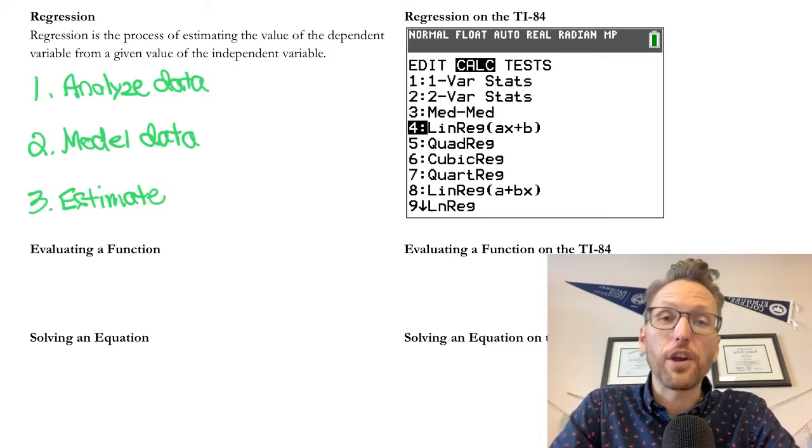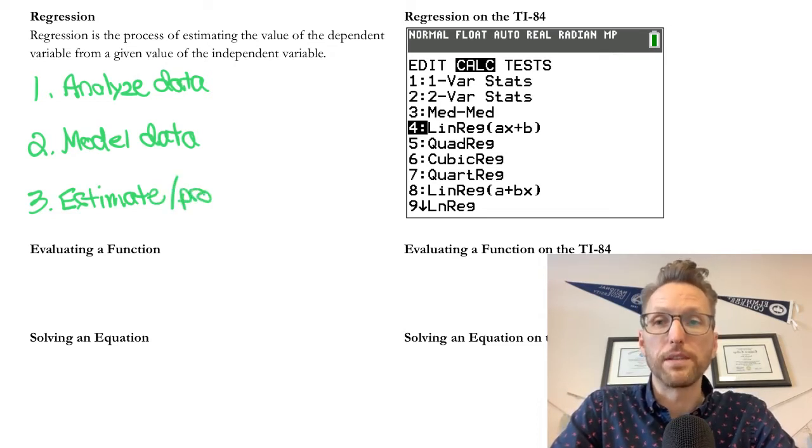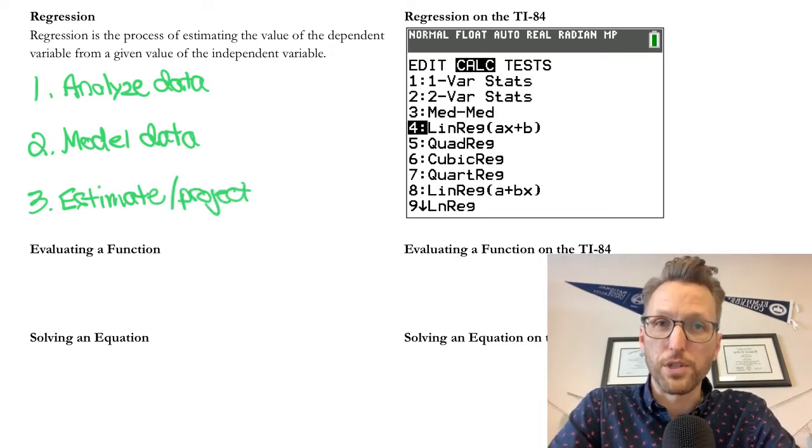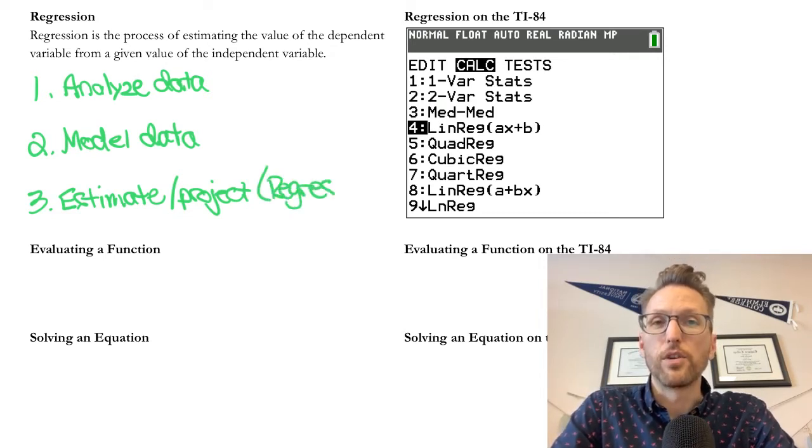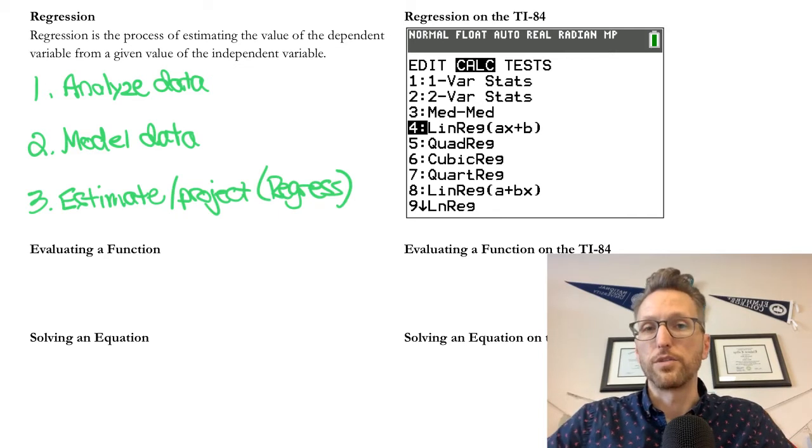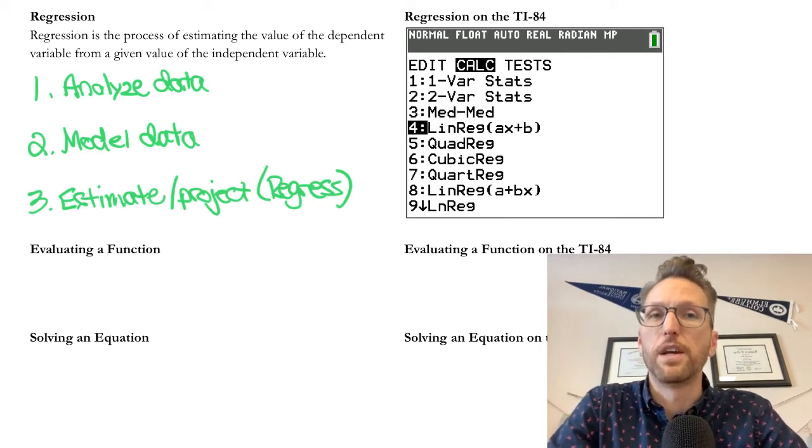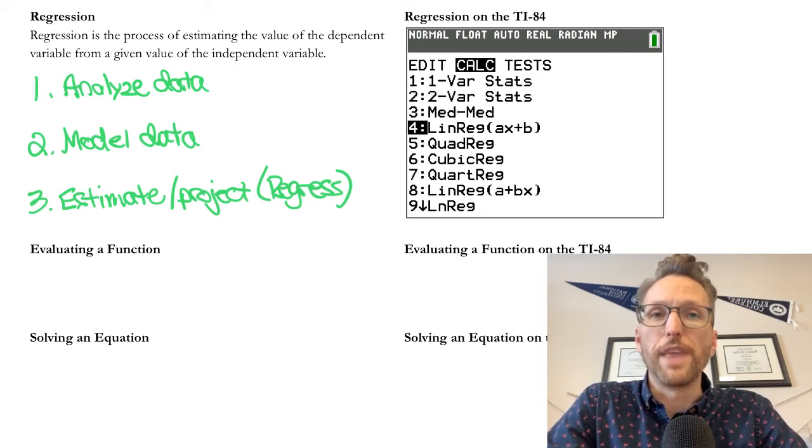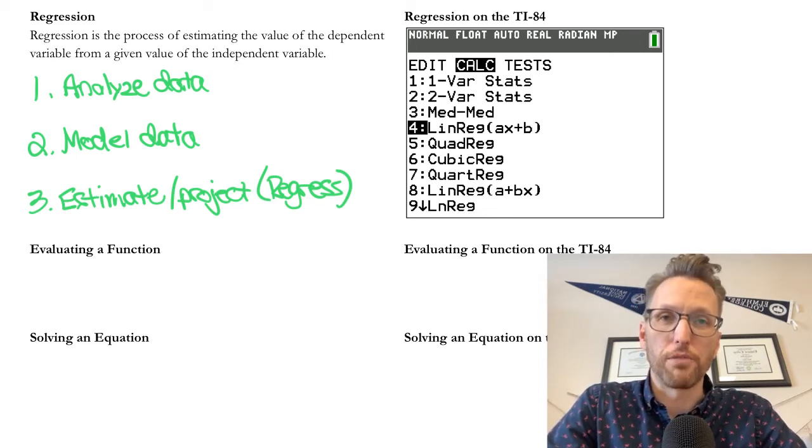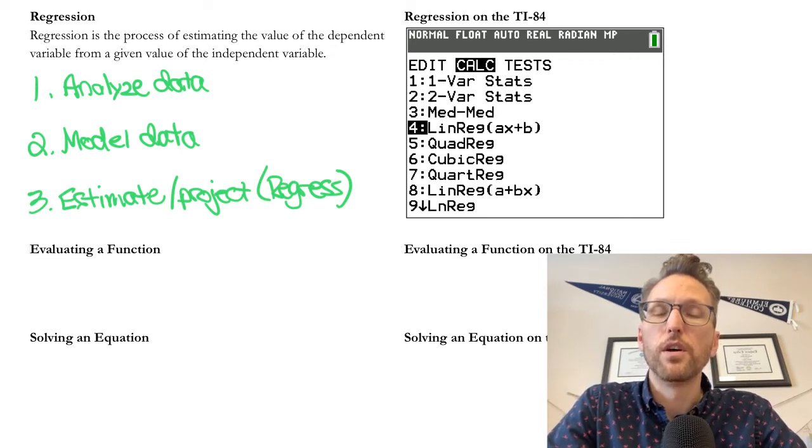And then finally, the third step, which is the whole purpose of this, is to estimate or project values from that data. So it could be a variety of situations. Again, interactions that we have in our everyday life. So that third step is really the regression step. It's being able to predict something in the future or something in the past based on your data.